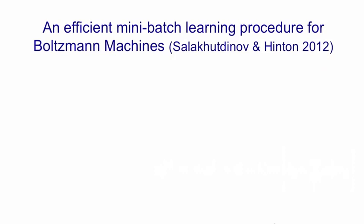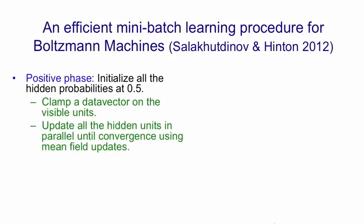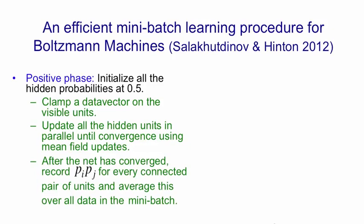We can get an efficient mini-batch learning procedure for Boltzmann machines — and this is what Russ Salakhutdinov realized. In the positive phase, we initialize all the probabilities at 0.5, clamp a data vector on the visible units, and update all the hidden units in parallel using mean field until convergence. For mean field, you can recognize convergence when the probabilities stop changing. Once converged, we record pi*pj for every connected pair of units.